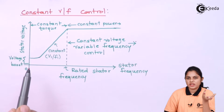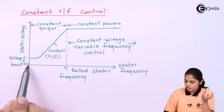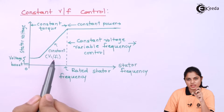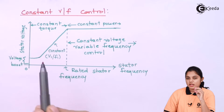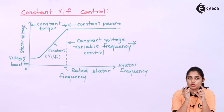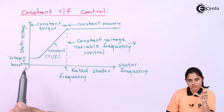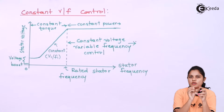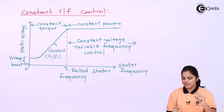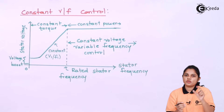Starting from zero, when there is no supply the frequency is also zero. As you increase from zero, if you maintain V1 and F1 — the supply voltage and supply frequency ratio — as constant, then if you increase some amount of voltage you should also increase the frequency to maintain that ratio.